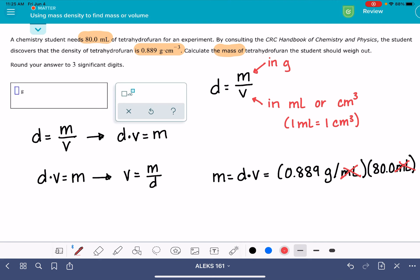So we're going to do the math. 0.889 times 80 is 71.12 grams, and we're supposed to report this to three significant figures, which is going to be 71.1 grams.